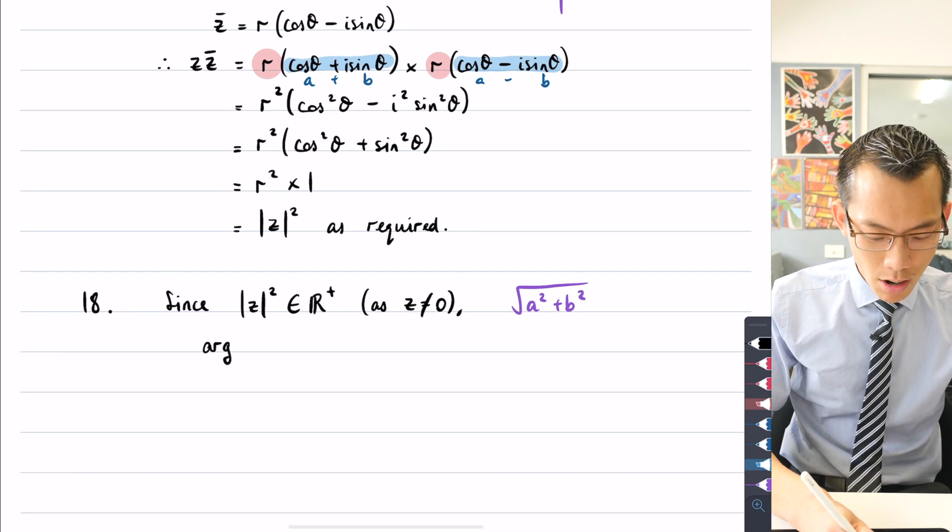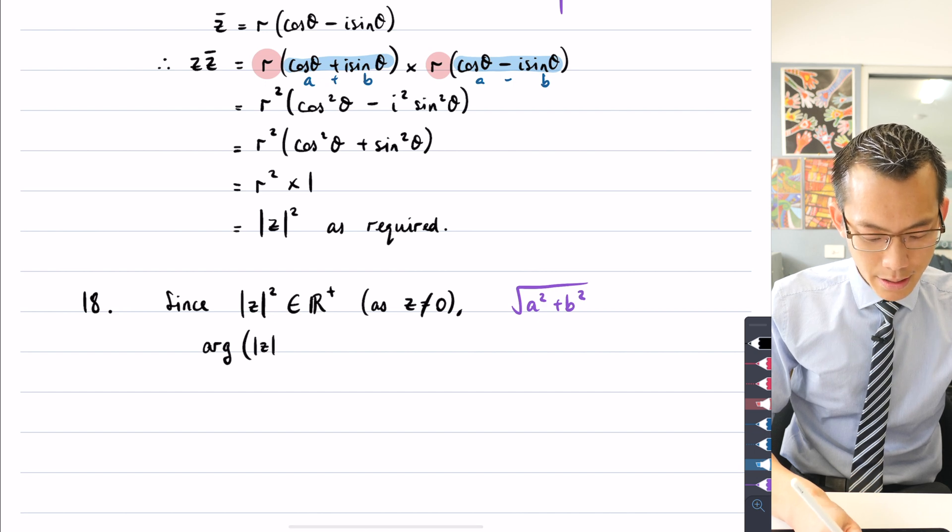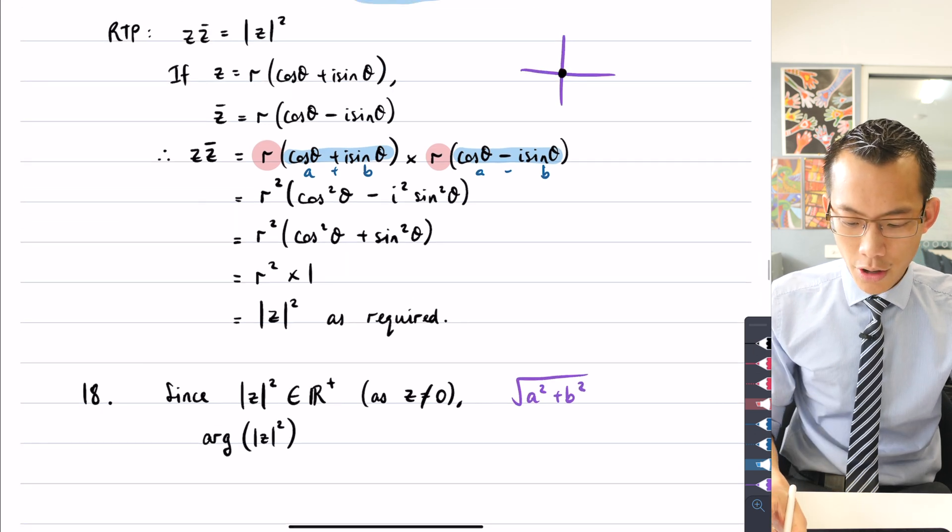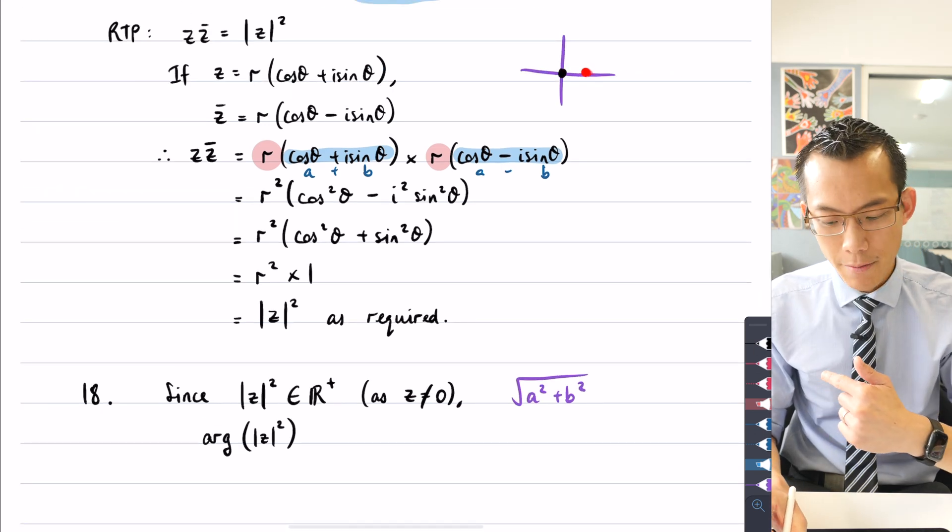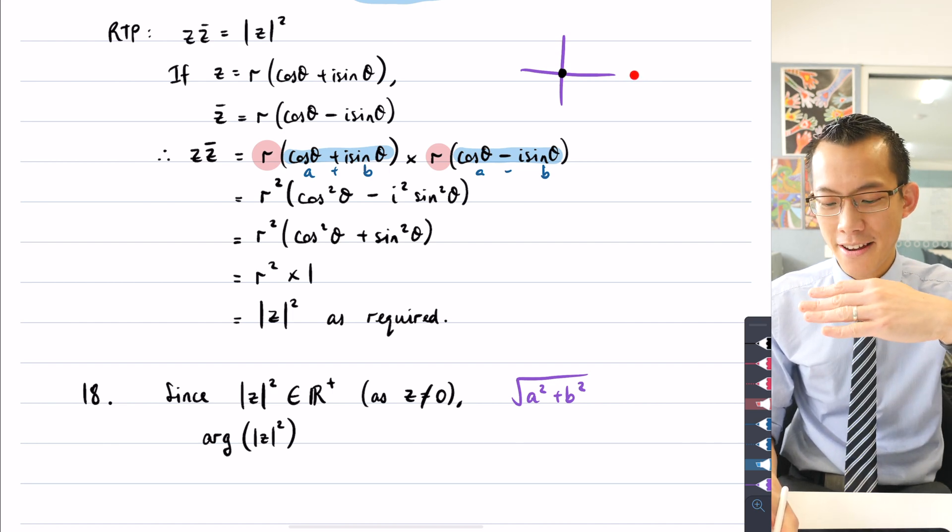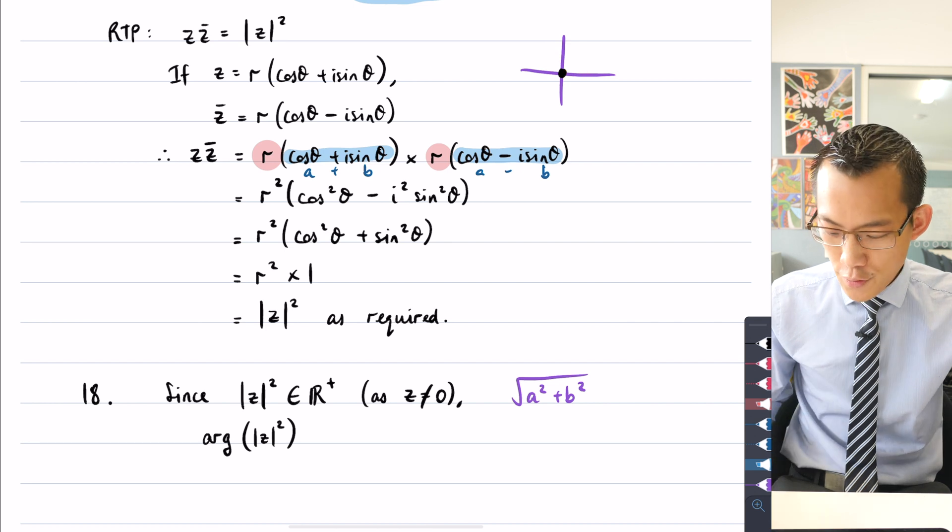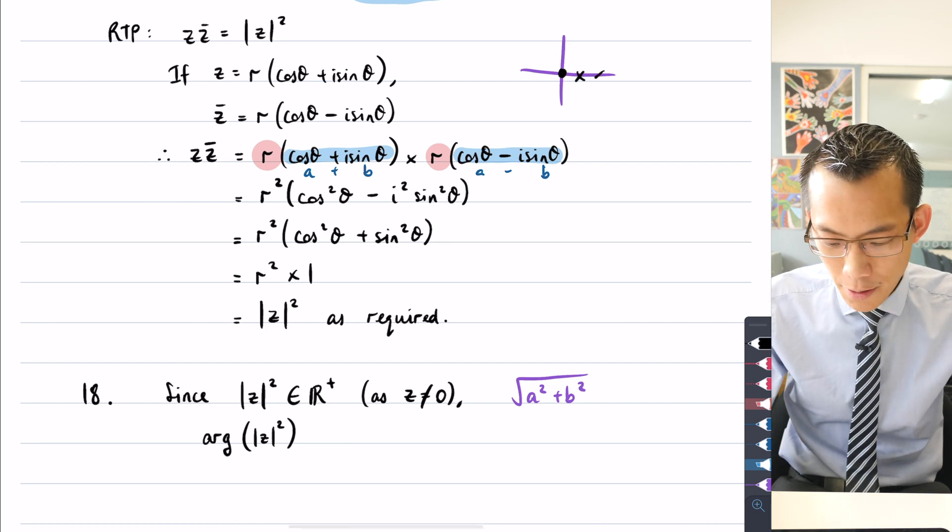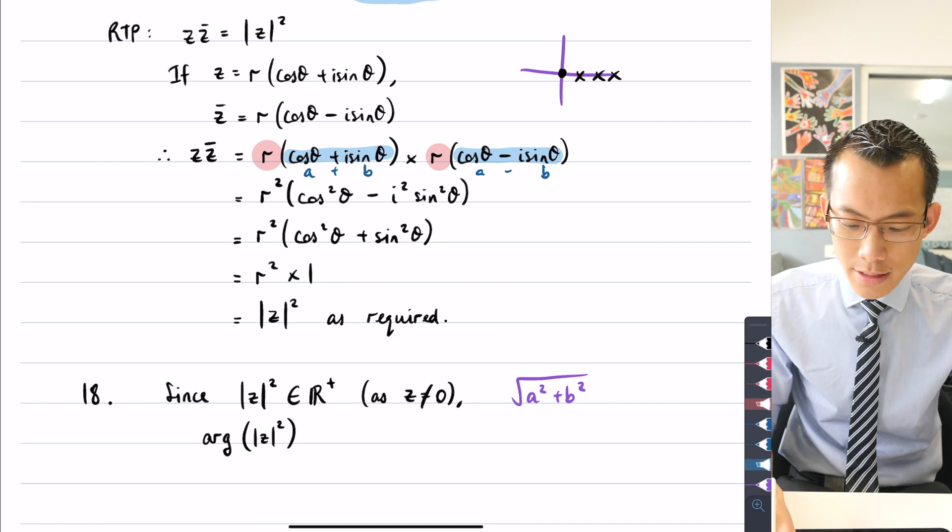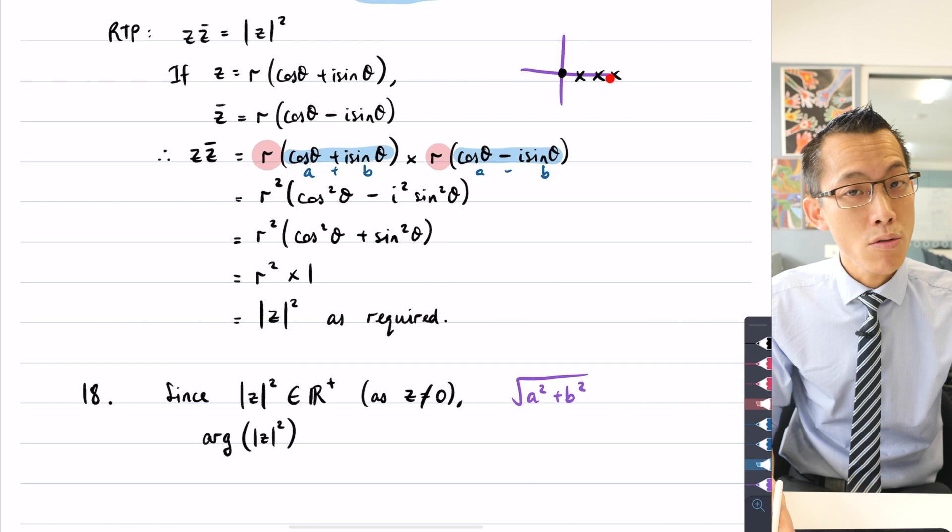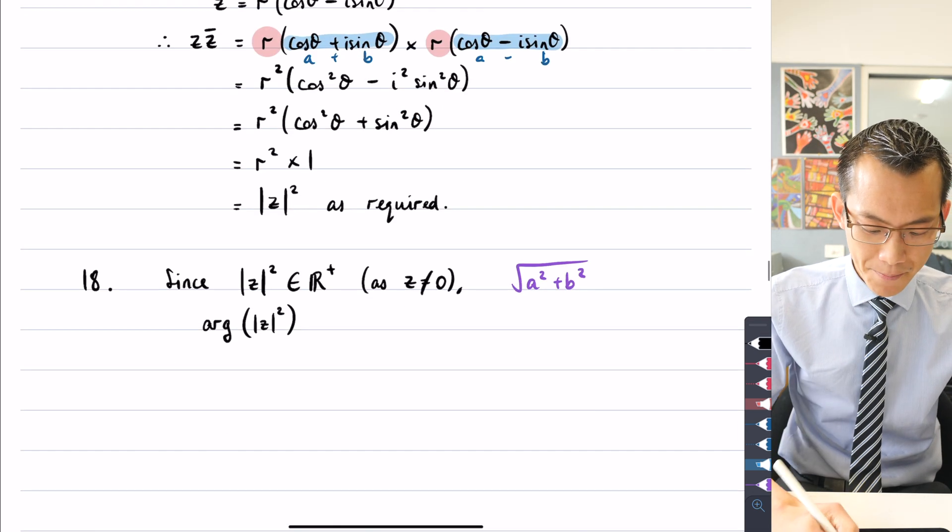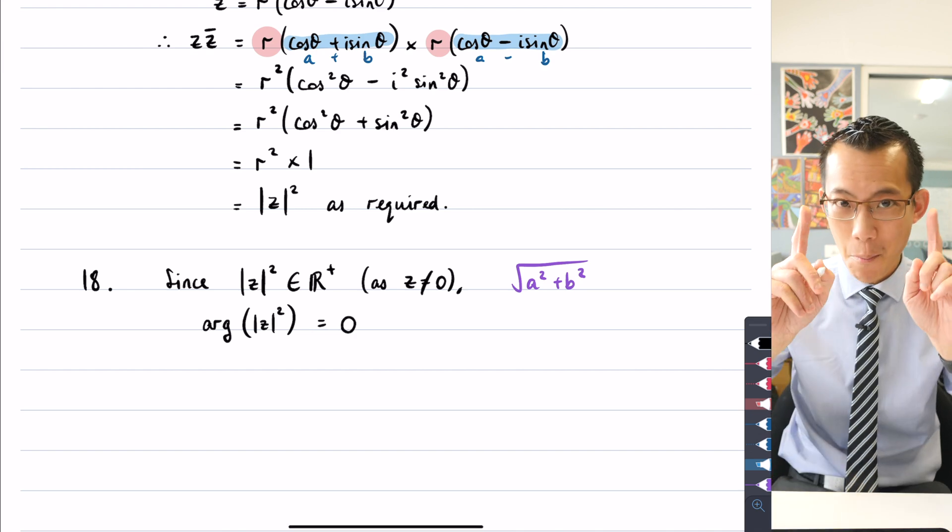Since the modulus of z all squared, it has to be a real positive number because I'm excluding zero. As z is not equal to zero, I can say therefore that the argument of the modulus of z squared is going to be, think about this, it's going to be somewhere on the real number axis and on the right hand side. But if we said that the argument is by definition the angle that you're facing at starting from the real positive axis and rotating up, if you've got any number over here on the real axis on the positive side, the argument to all of these numbers is going to be zero. You don't have to rotate anywhere. This is your starting point. So therefore I can say that argument is going to be zero.